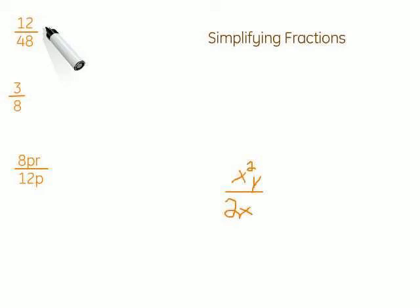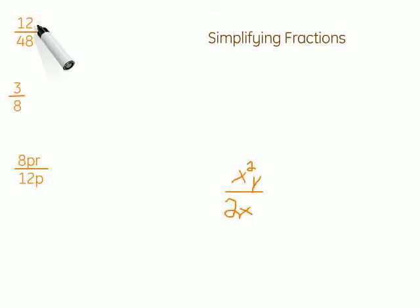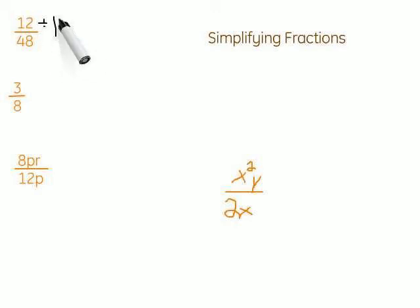Whatever you choose is up to you, but just know if you choose a smaller number than the maximum one — in this case 12 — you might have to do more steps. I'll do it both ways just to show you what I mean. Let's start by dividing by 12 on the top and the bottom of our fraction.